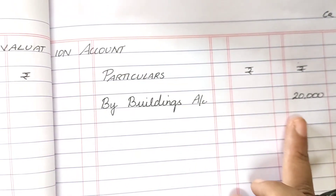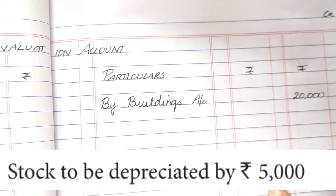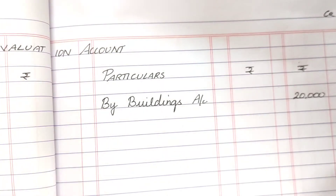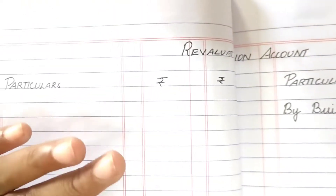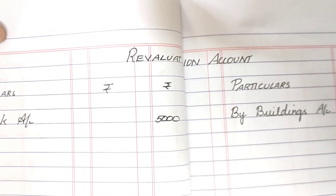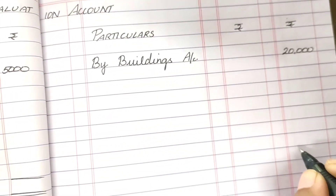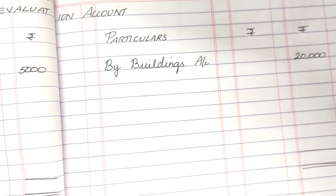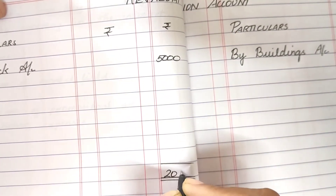On the credit side of the revaluation account, by Buildings Account: the difference of 1 lakh minus 80,000 = 20,000 is recorded. Next, stock is depreciated by 5,000. Stock is an asset and it is depreciated, therefore it goes to the debit side of the revaluation account — To Stock Account: 5,000. We leave roughly six lines on either side and draw the grand total; 20,000 is the greatest total so it goes on both sides.